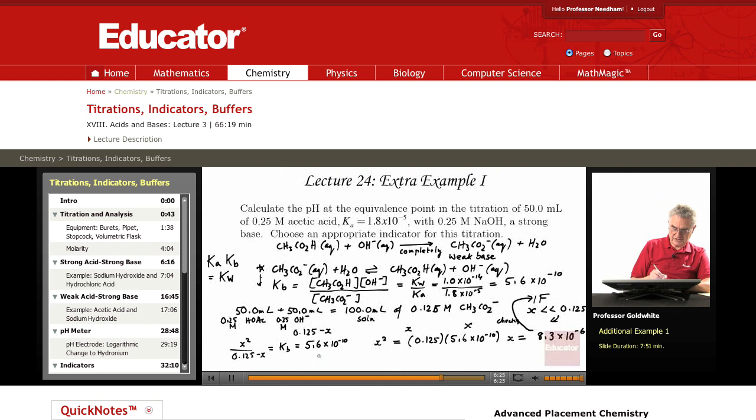x equals the hydroxide ion concentration. Hydroxide ion concentration is 8.3 times 10 to the negative 6. pOH is therefore 5.08 and the pH equals 14.00 minus 5.08 equals 8.92 noticeably basic.